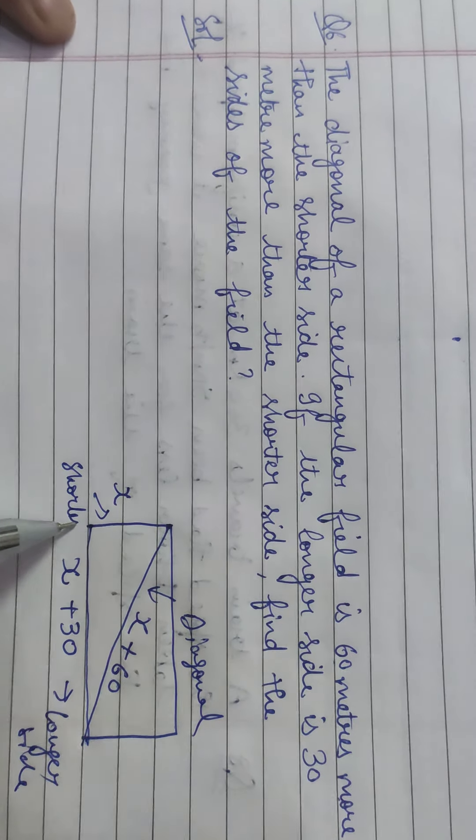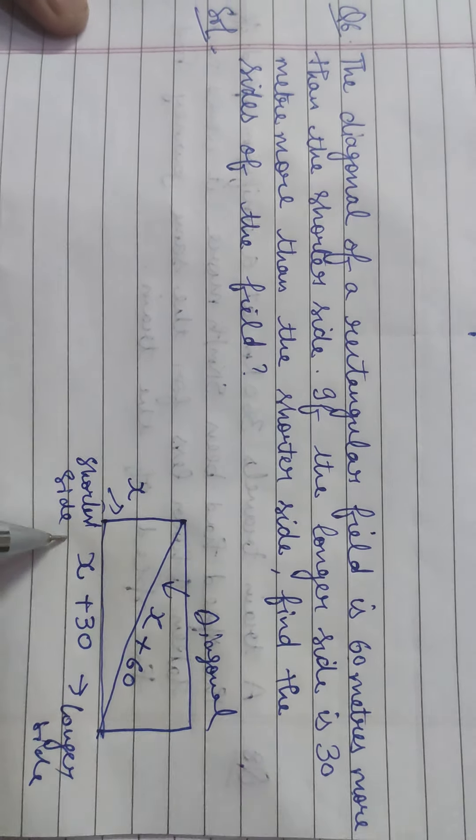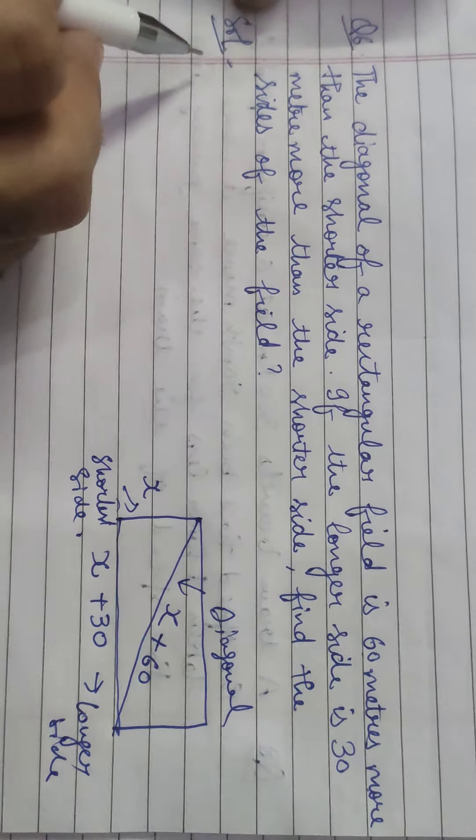In a class test, the sum of Shefali's marks in Mathematics and English is 30. Had she got 2 marks more in Mathematics and 3 marks less in English, the product of their marks would have been 210. Find her marks in the 2 subjects.